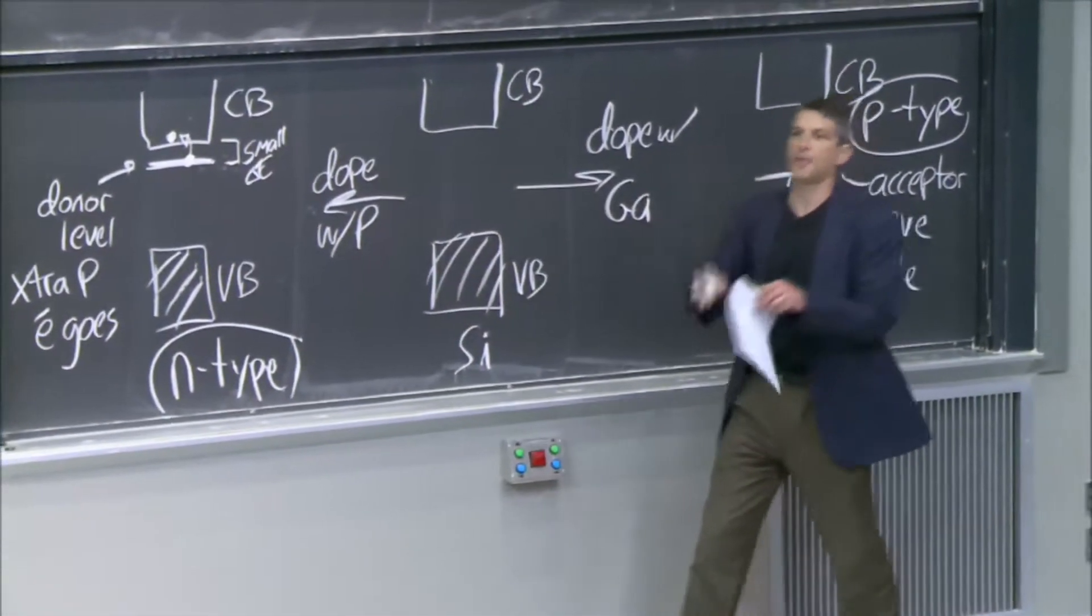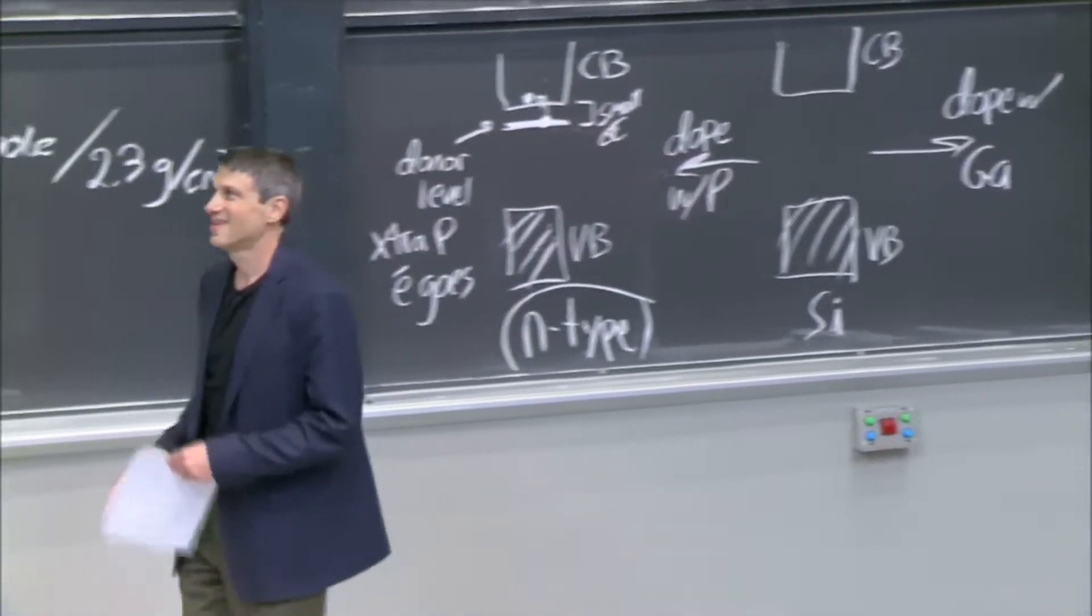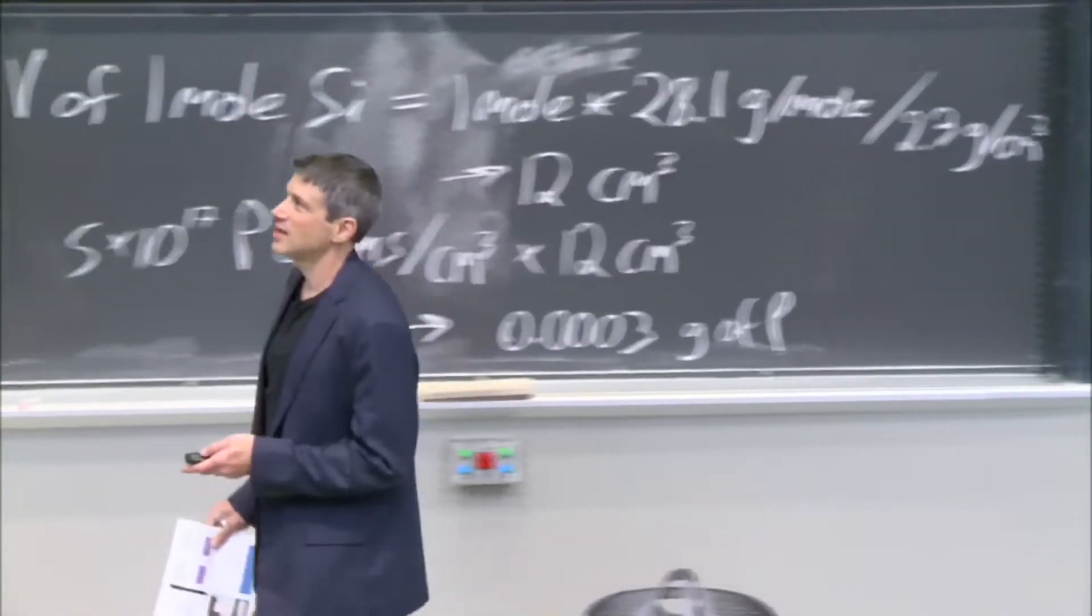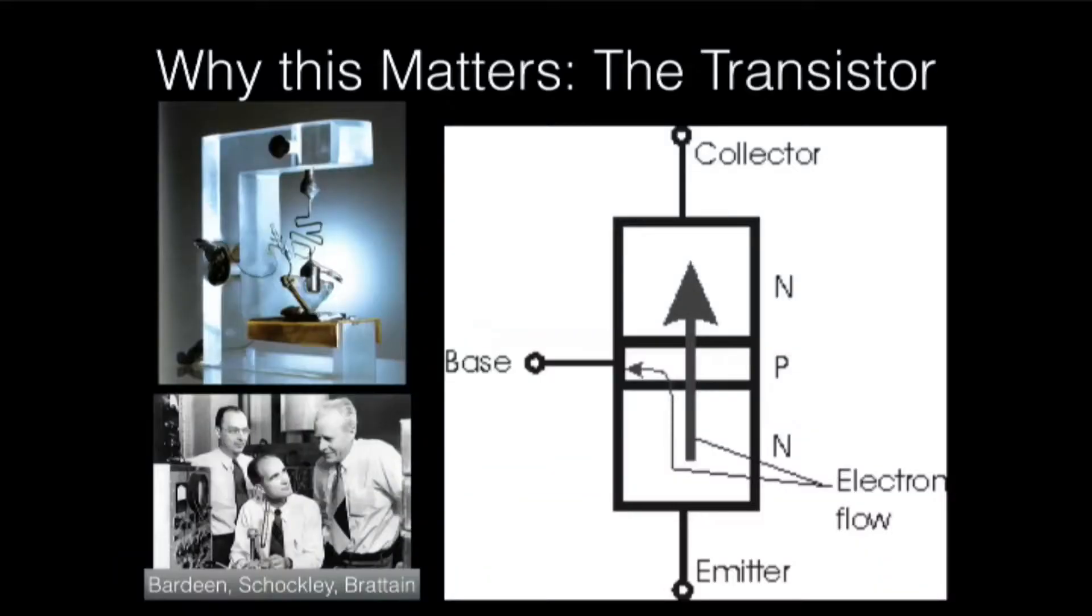N-type and I take a P-type, and I put them together, some really important things happen. So important that it led to this, which is the very first transistor. That's the transistor. It's a doped semiconductor, one type, next to a doped semiconductor, another type.